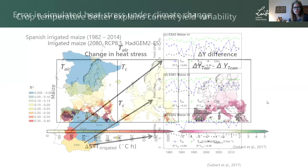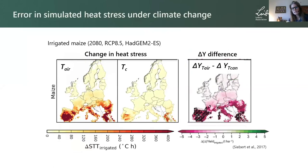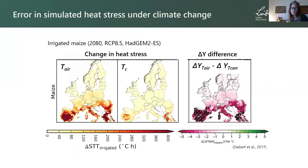When we took that forward into a climate change impact setting, we found that the difference between using air temperature or canopy temperature to drive heat stress modules could lead in irrigated parts of Spain to upwards of a four to five ton per hectare yield difference. We get very different simulations of climate change impacts in irrigated systems depending on whether we use canopy or air temperature, because using air temperature, you're not going to be able to pick up on the cooling impact of irrigation.